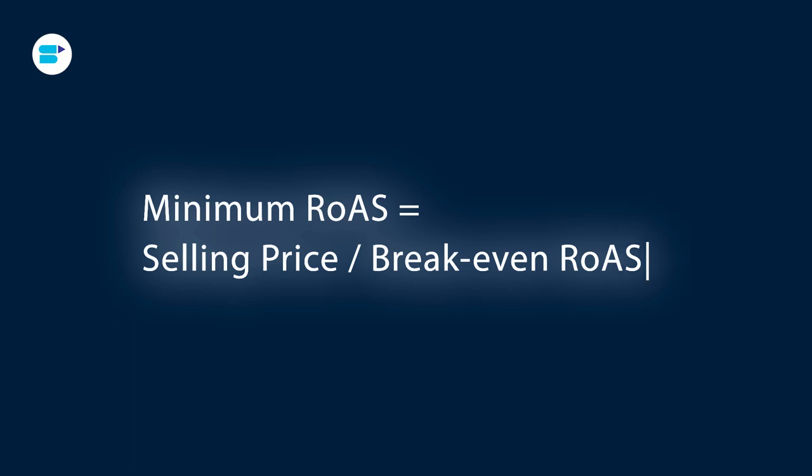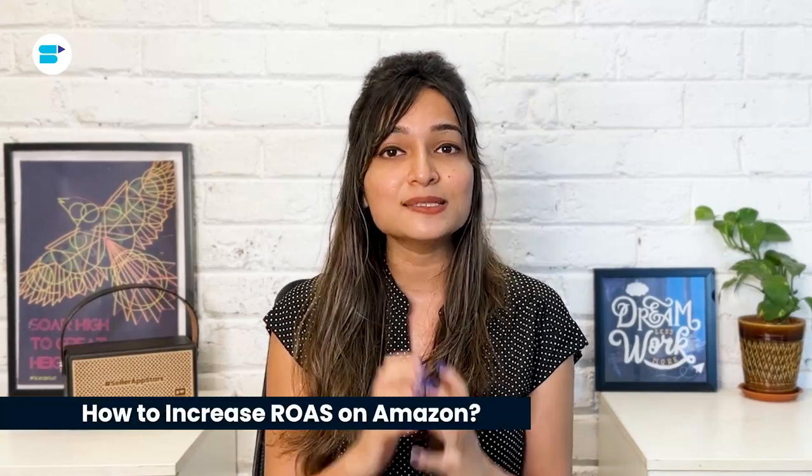To figure out your baseline ROAS, start by finding your break-even point. The formula is: Minimum ROAS = Selling Price ÷ Break-even ROAS. For example, if you sell a product for 35 dollars and your break-even ROAS is 8, your minimum ROAS is 4.38. This means for every dollar you spend on ads, you should make 4.38 dollars to ensure you're making a real profit, not just covering your costs.